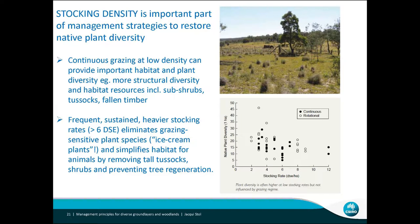It didn't really matter in terms of whether grazing was continuous or rotational — it was more related to the stocking rate. Native plant diversity per hectare tended to be higher at lower stocking rates, which decreased as stocking rates became higher. But you've always still got some sort of diversity even at those higher stocking rates.